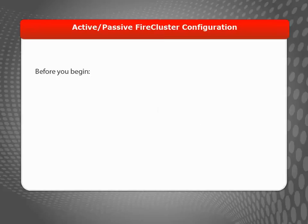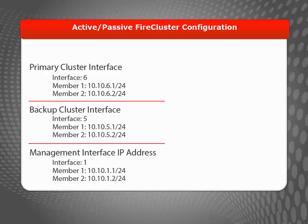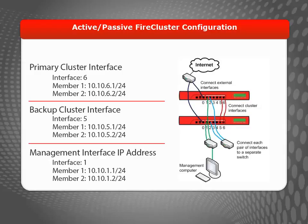Before enabling FireCluster, make sure that you have the hardware required, you've planned the IP addresses and interfaces to use, and you have disabled any unused interfaces in the configuration file. If you configure an active-passive cluster, make sure that your network interfaces are configured in mixed routing or drop-in mode. To configure an active-active cluster, your network interfaces must be configured in mixed routing mode. FireCluster does not support bridge network mode.